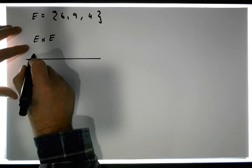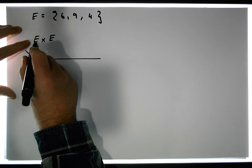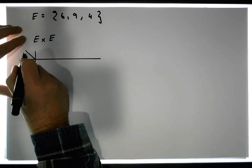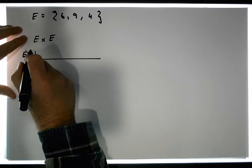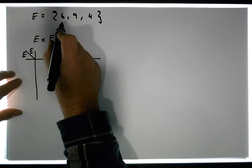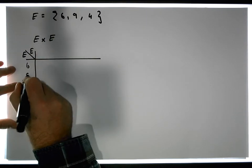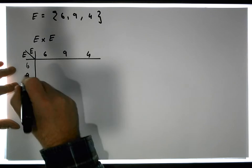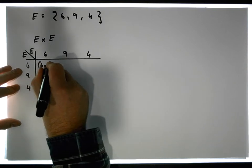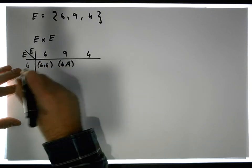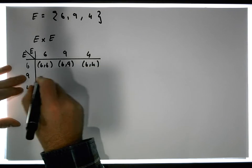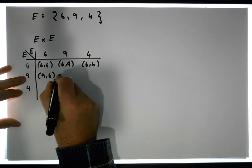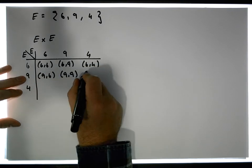Once again, we construct our table. So the domain elements get listed down the first column, and the range elements are across the first row. So E is 6, 9, and 4, and E is also 6, 9, and 4. So the ordered pairs are 6,6, 6,9, 6 with 4, we have 9 with 6, we have 9 with 9, and we have 9 with 4.